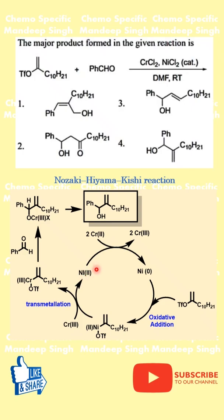The first step is the reduction of nickel(II) to nickel(0). The chromium(II) gets oxidized to chromium(III). As soon as nickel(0) is formed, it undergoes an oxidative insertion step with the alkenyl triflate. Note that it could have been an alkenyl bromide or alkenyl chloride — it would have been the same.